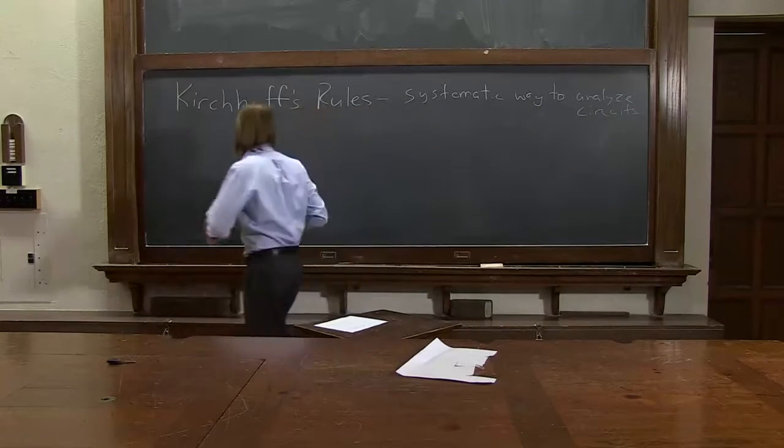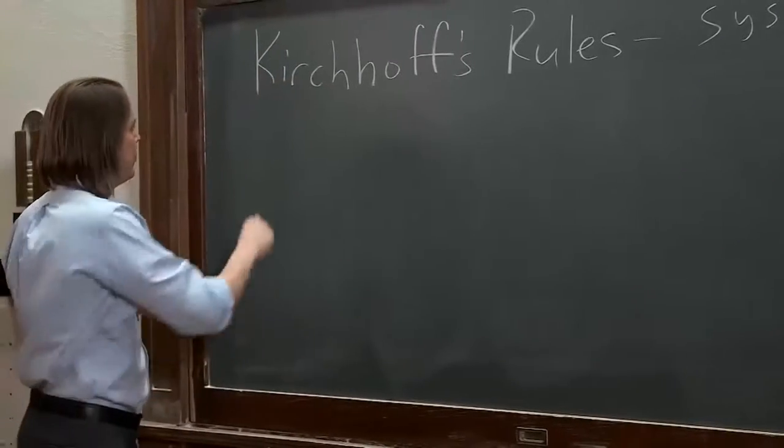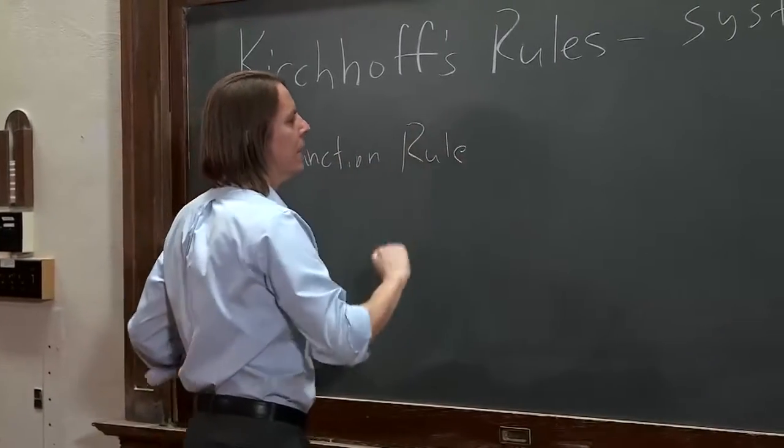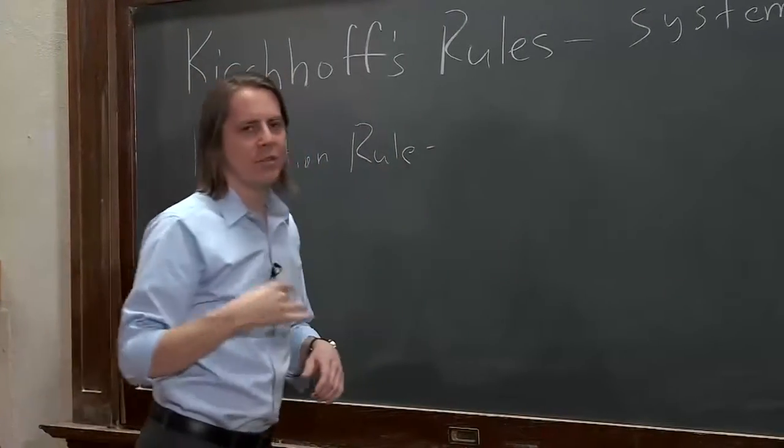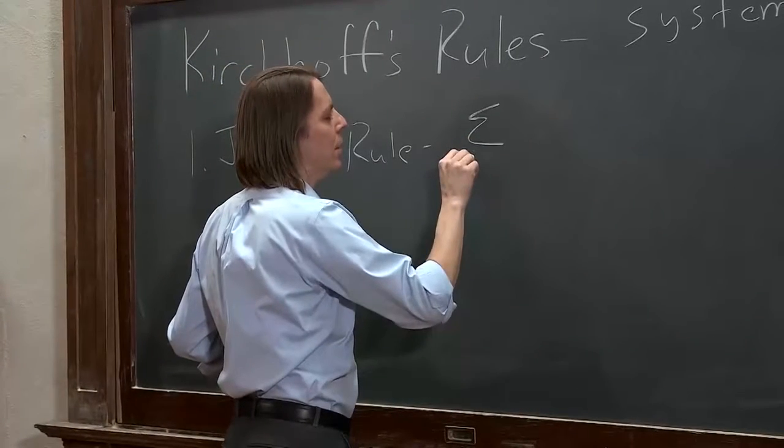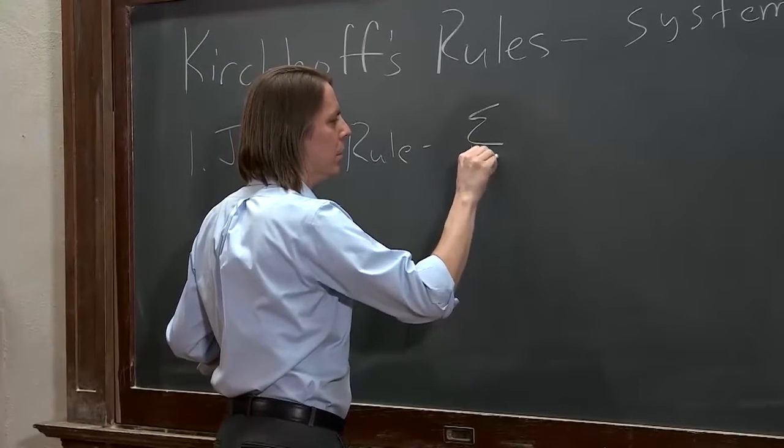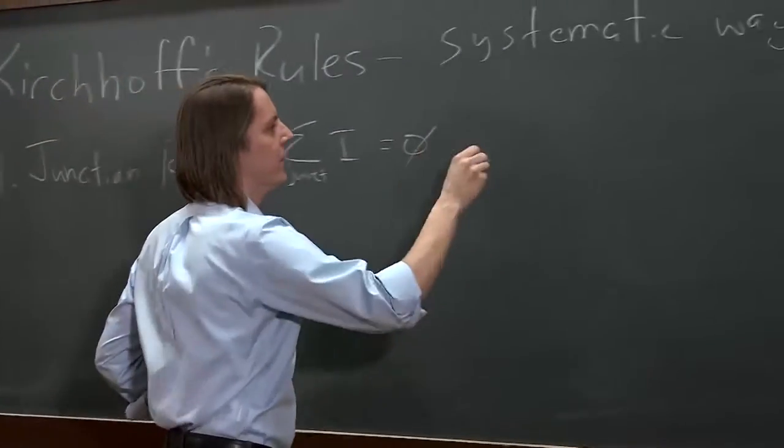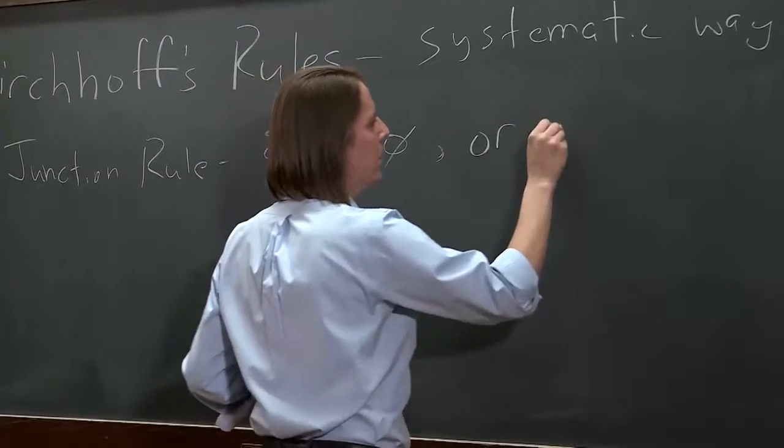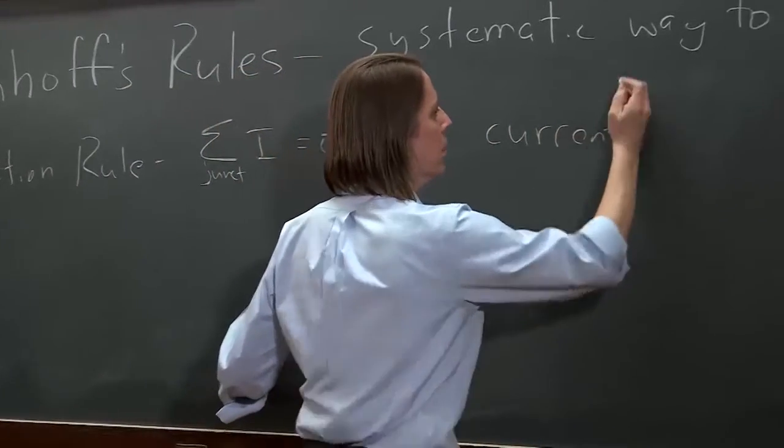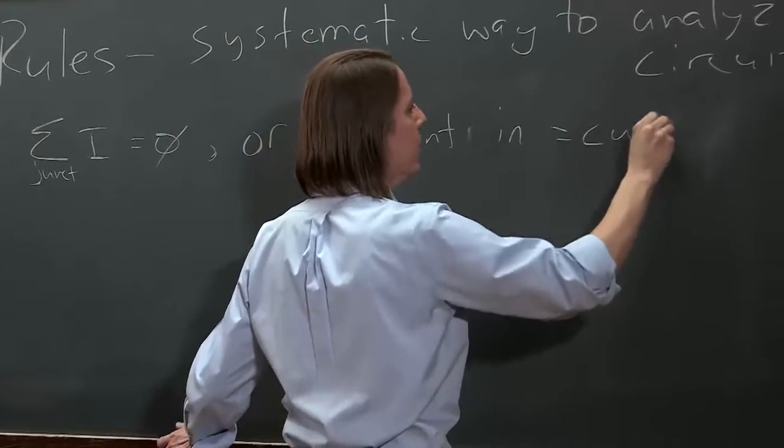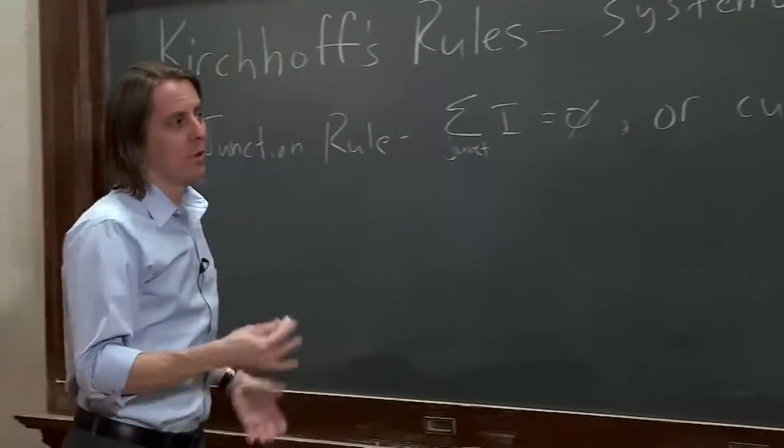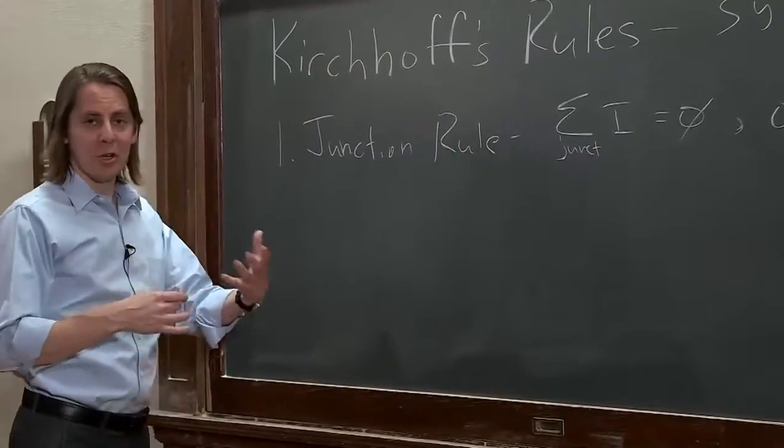So there are two. The first Kirchhoff rule is the junction rule. If we state it mathematically, it's simply the sum at a junction of the current equals zero, or you could also just say current in equals current out. We know that charge has to be conserved, so we can't have more current going into a junction than coming out.